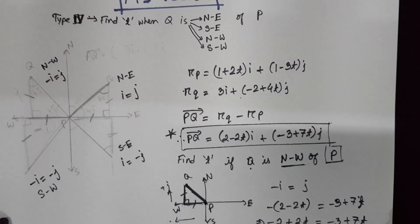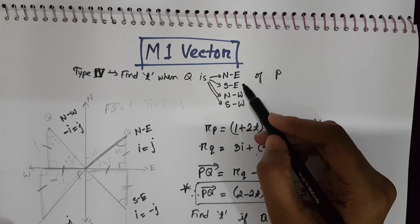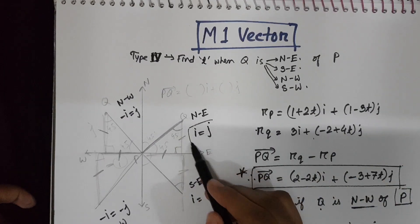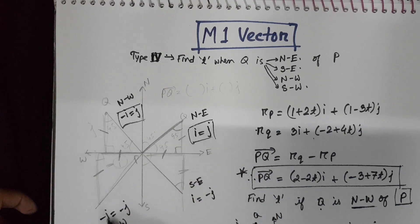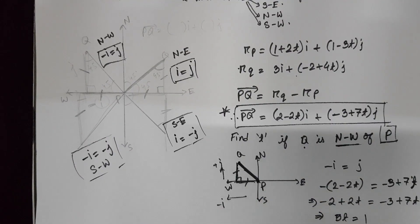Similarly, you can find the value for the remaining direction just considering the sign of I and J. You do not need to memorize all this. You can draw a rough diagram to find the direction.